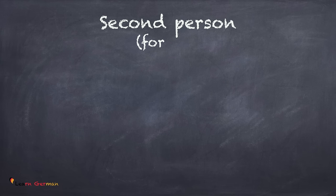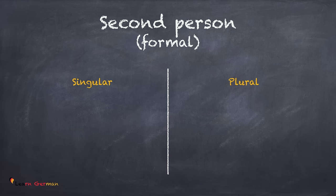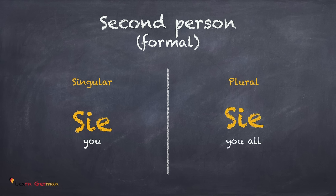Let's come to personal pronouns for the second person in a formal situation. Here again, we have a singular and a plural. If you are talking to a single person, you would use Sie, and if you are talking to more than one person, then also you would use Sie. This is very easy to remember as both the singular and the plural forms are Sie.